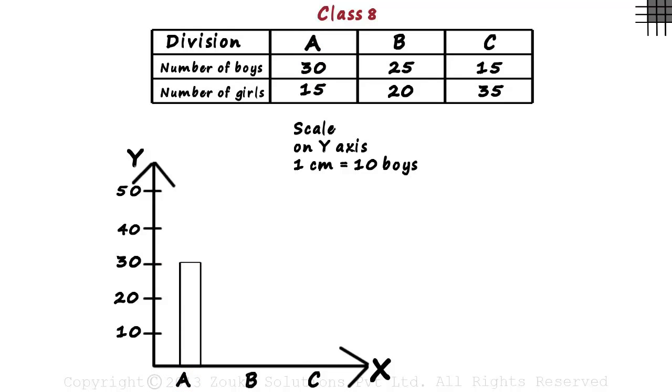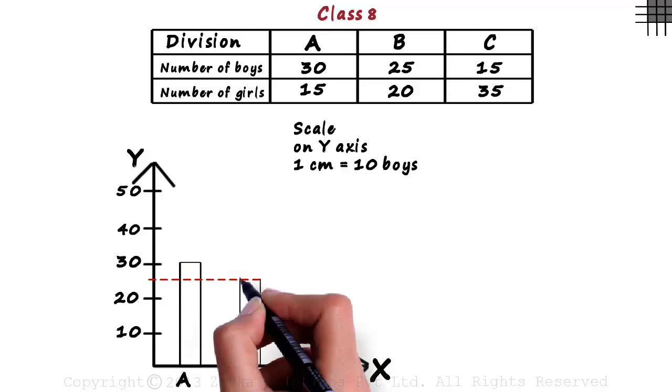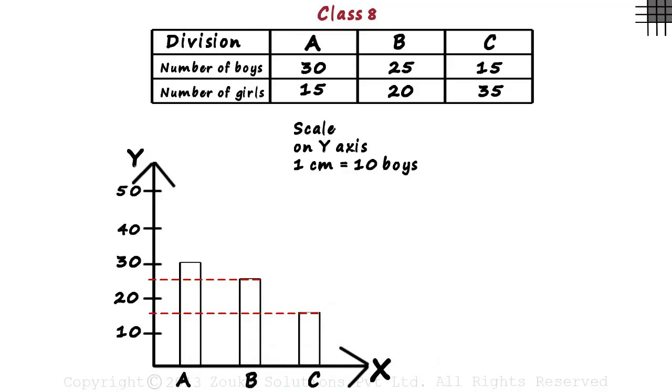Similarly, we draw bars of lengths 2.5 and 1.5 centimeters for B and C. 2.5 centimeters represents 25 boys in Division B, and 1.5 centimeters represents 15 boys of Division C.